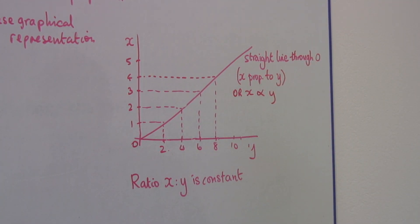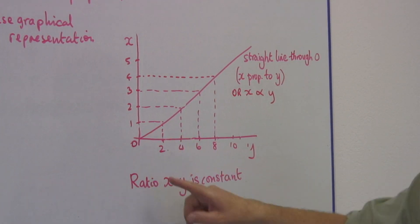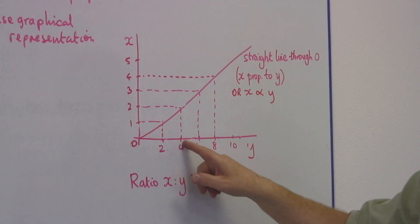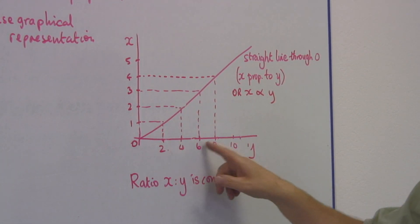The most important thing from this is that when x is 1, y is 2. When x is 2, y is 4. When x is 3, y is 6, and so on.